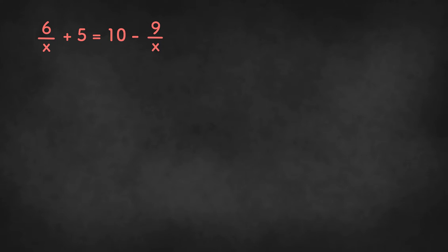When we see equations with variables as the denominator, the step we need to take is to remove them from the denominator. We can do that by multiplying both sides of the equation by x.